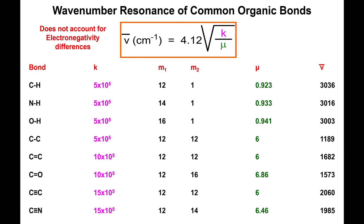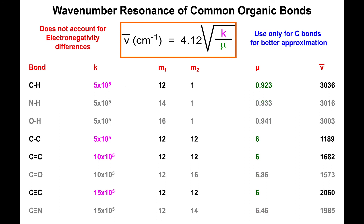Based on this equation, we would predict that oxygen-hydrogen and nitrogen-hydrogen bonds have values lower than carbon-hydrogen, since nitrogen and oxygen are heavier than carbon. However, this equation does not take into account electronegativity. The more electronegative your elements are, and the greater the electronegativity difference between them, the stronger the bond. So this equation is only good for non-polar bonds like carbon-carbon and carbon-hydrogen bonds. I recommend using it only for non-polar bonds.